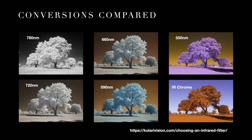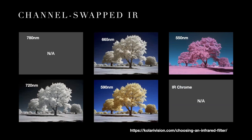One technique we've learned in post-processing is the channel swap, where you reverse the red and blue channels — traditionally done using the channel mixer tool in Photoshop. When you swap them, at 665 nanometers you get a blue sky with very strong white foliage. At 590 nanometers you get yellow or golden foliage with a blue sky, with proper white balancing. At 720 nanometers it's mild — a light blue sky but still white foliage. You don't swap 780 and you don't swap IR Chrome, so those are not applicable. The channel swap can help direct you toward the conversion you want.